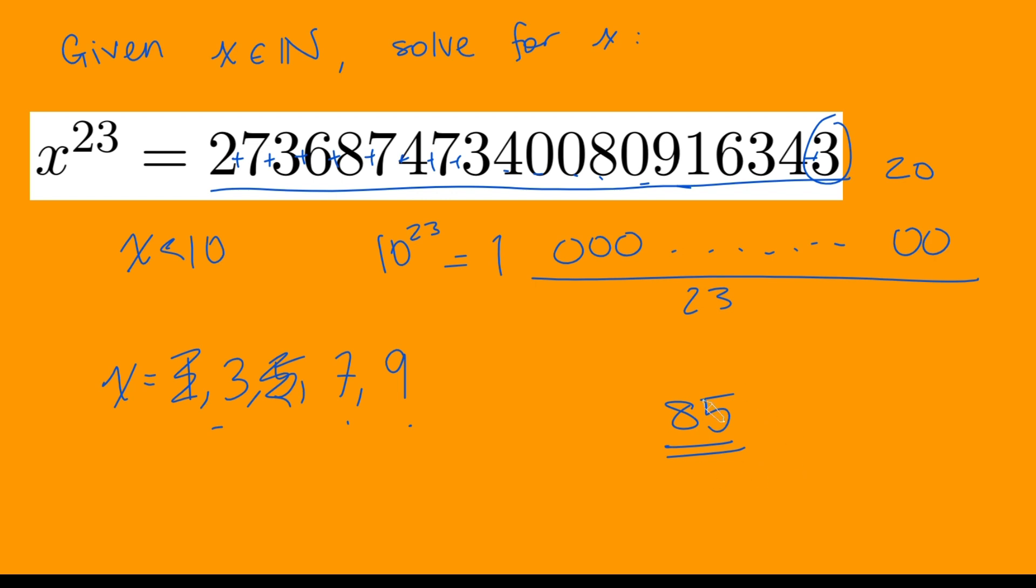And now 85 is a much smaller number, and we know that this number here is not a multiple of 3. And so therefore, that means that this number here is not a multiple of 3.